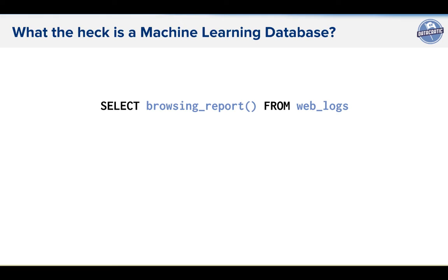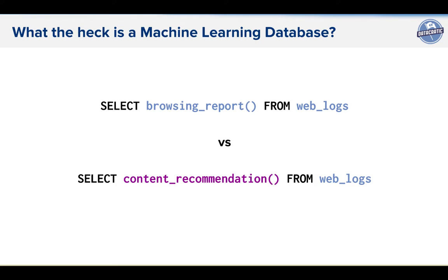What the heck is a machine learning database? This is the kind of query you get from a traditional database: select the browsing reports from the weblogs. Most people don't store weblogs in SQL stores, but conceptually you're asking about summations on the past from weblog data. What a machine learning database allows you to do is essentially select the future — select content recommendation from weblogs. This is the use case the gentleman from OutBrain was talking about: given some browsing data, don't tell me what was browsed, tell me what's likely to be browsed so I can make content recommendations. In fact you can actually run a SQL query almost exactly like this.